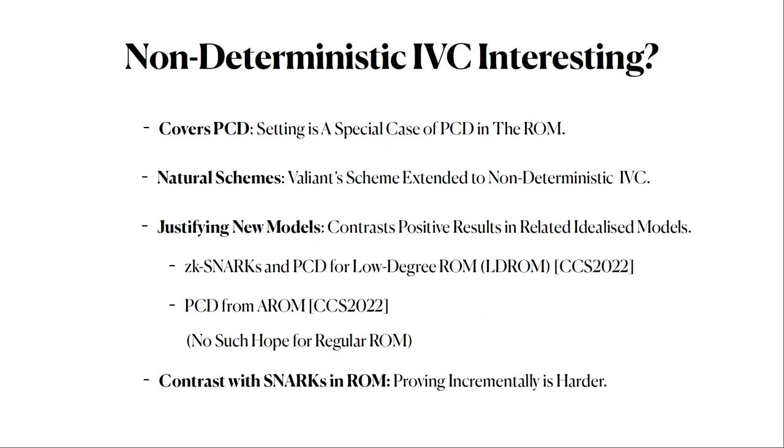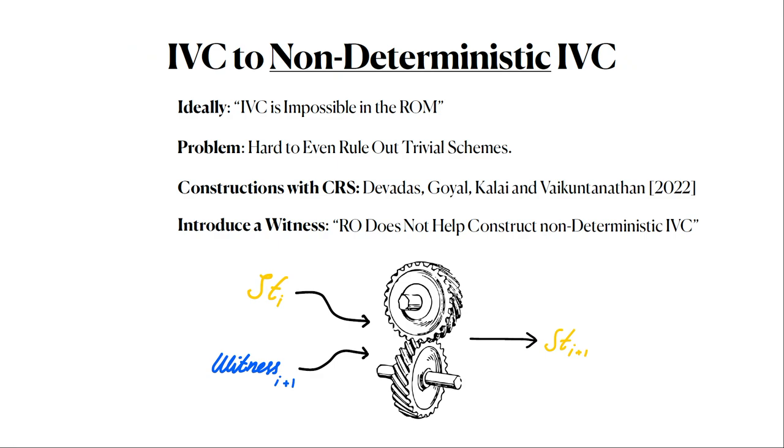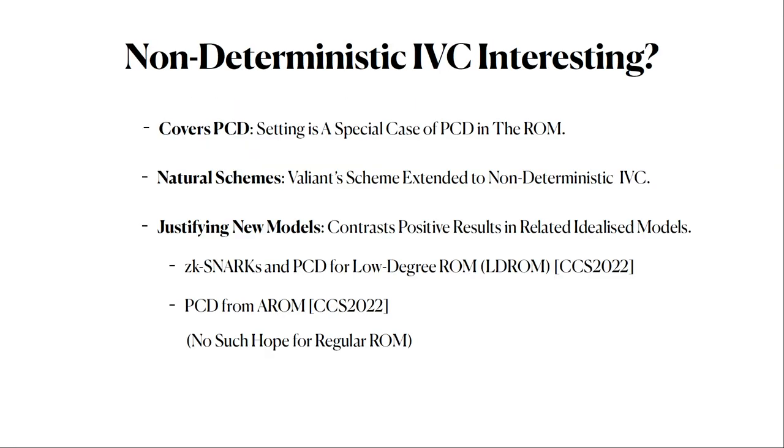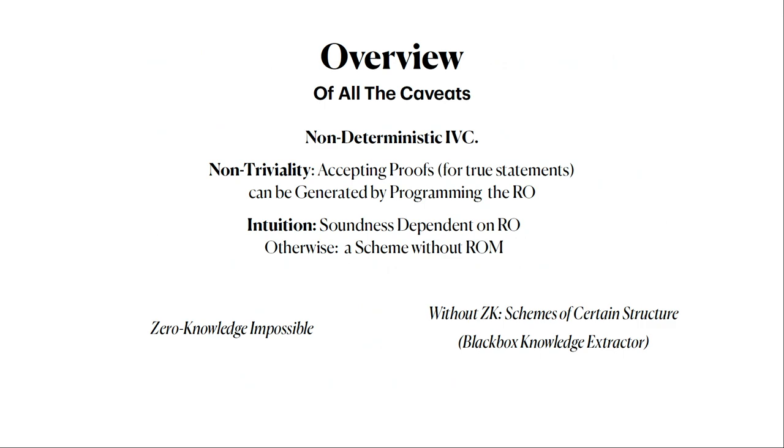I have this claim that it does not help. That's not a formal claim. What does it mean that it doesn't help you to introduce a random oracle? It means that, first, we're doing this for non-deterministic IVC. Then we have this non-triviality assumption which basically says that you can generate accepting proofs for true statements by programming the ROM. Which kind of means that if you couldn't cheat by manipulating the random oracle, it means the proof is sound for an instantiation of the random oracle, which means the random oracle is not doing anything.